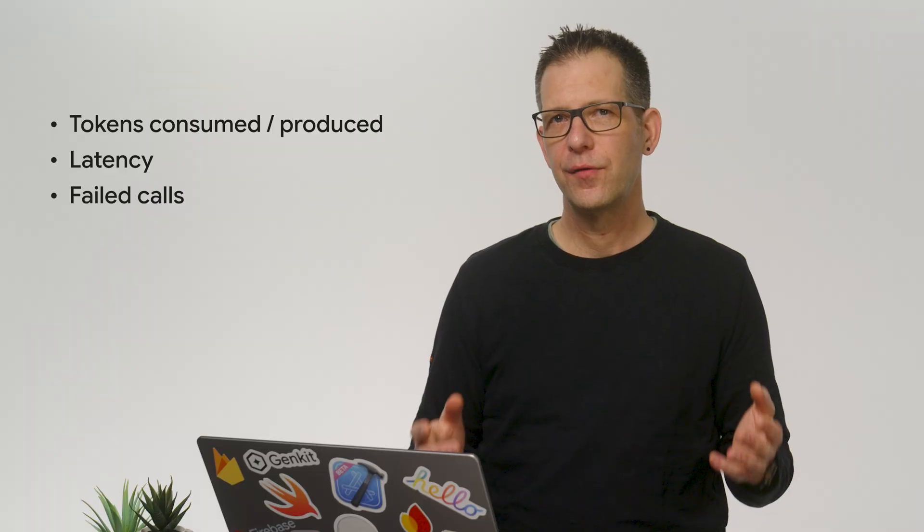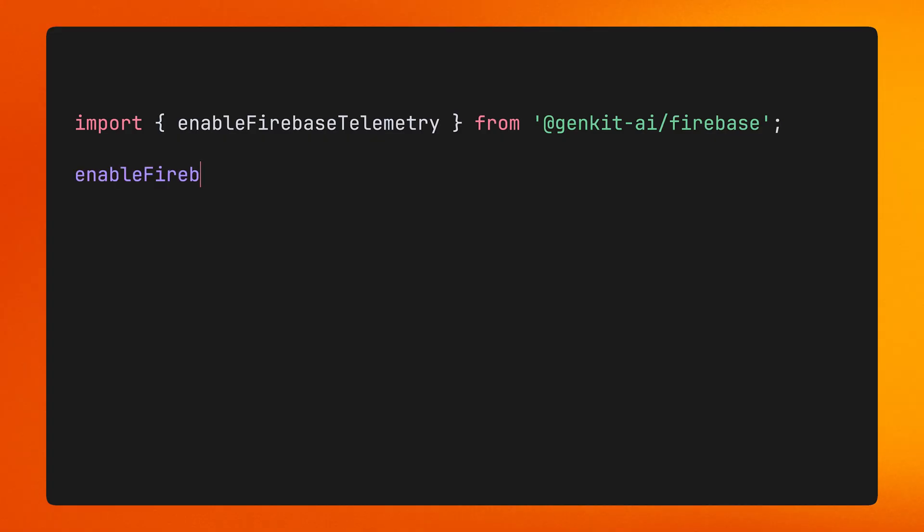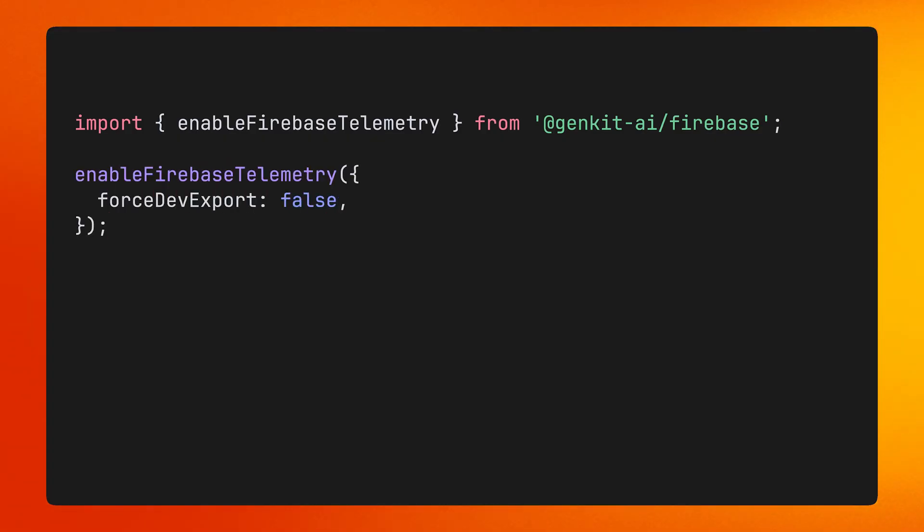Once your app is in production, understanding the performance and behavior of features built with LLMs is critical to the success of your app. How many tokens do your AI features consume? What's the latency of accessing the database in a flow? How many of your LLM calls fail? We've built production monitoring that you can access in the Firebase console, allowing you to see all the important vitals of your GenKit features and even inspect production traces of your app. Traces can also be exported and used for evaluations directly in GenKit. To enable telemetry for your GenKit flows and other actions, add the following lines to your source and redeploy.